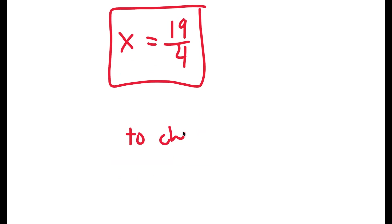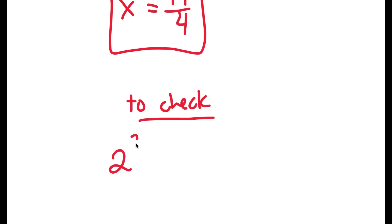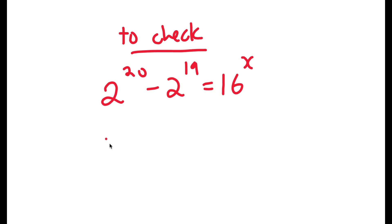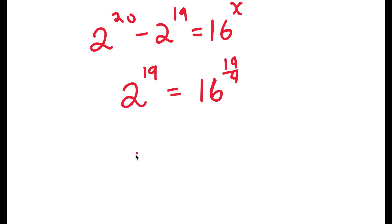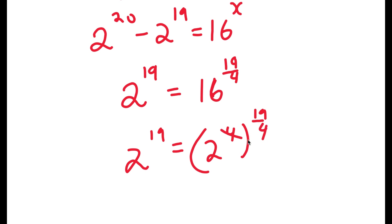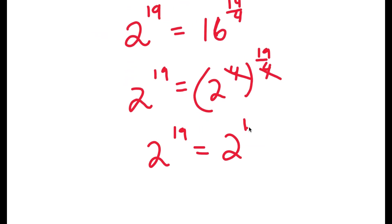To check, my original equation was 2 to the power of 20 minus 2 to the power of 19 is equal to 16 to the power of x. Now, 2 to the power of 20 minus 2 to the power of 19 — we already know that's 2 to the power of 19. So we get 2 to the power of 19 is equal to 16 to the power of 19 over 4. Now, 16 is the same thing as 2 to the power of 4, so I have 2 to the power of 4 to the power of 19 over 4, and these two 4s cancel out. So I get 2 to the power of 19 is equal to 2 to the power of 19.